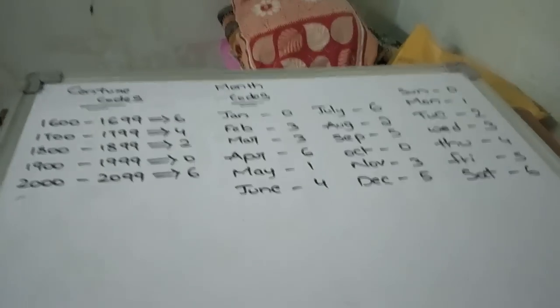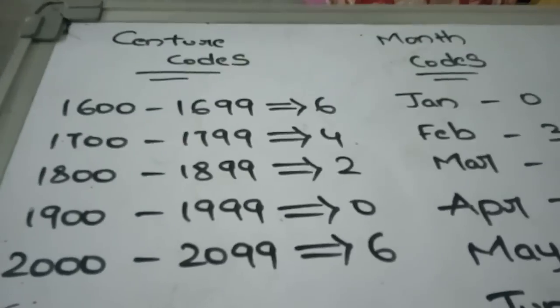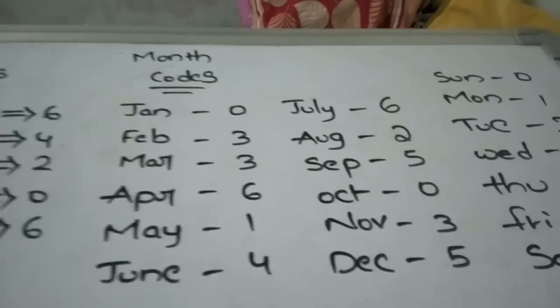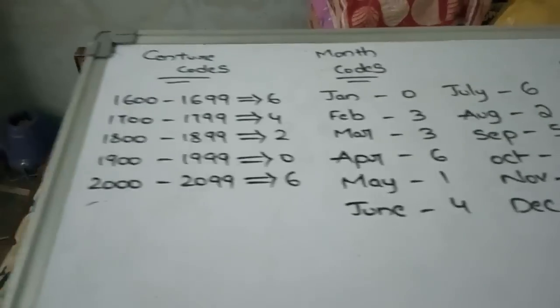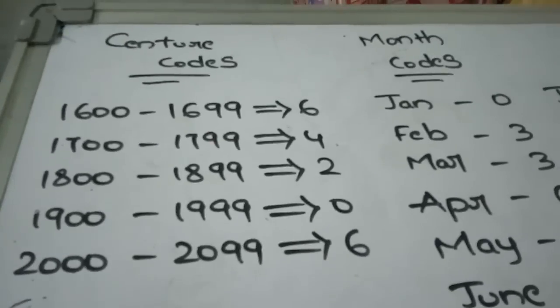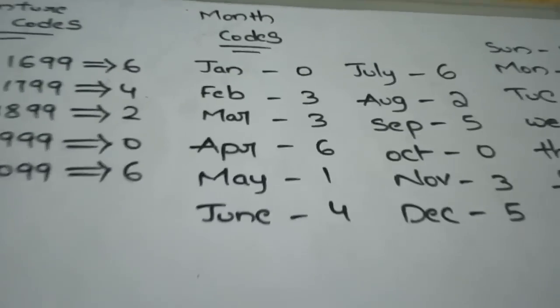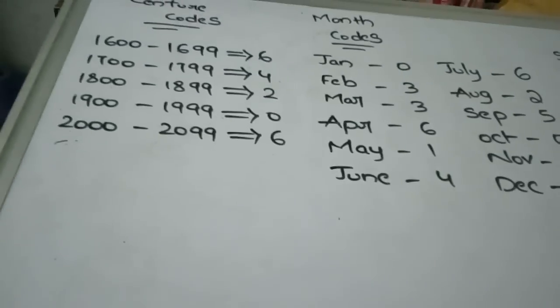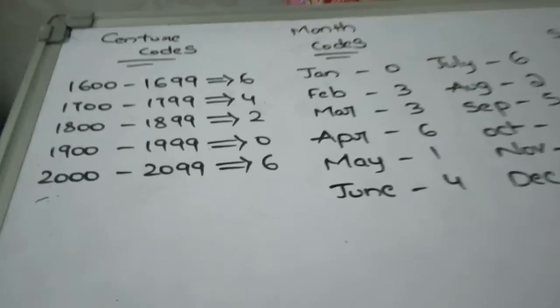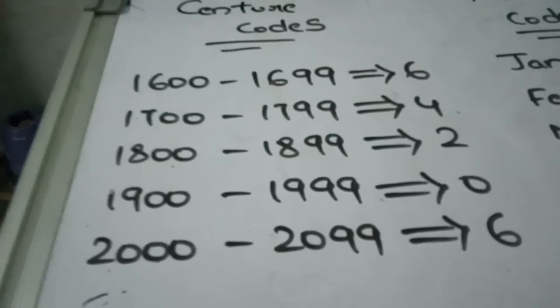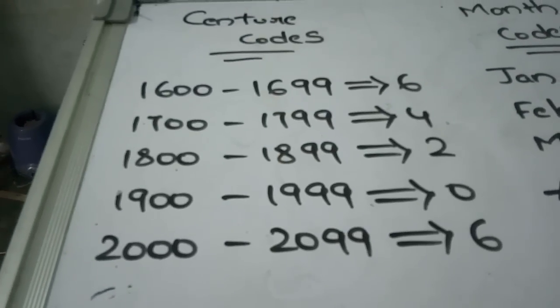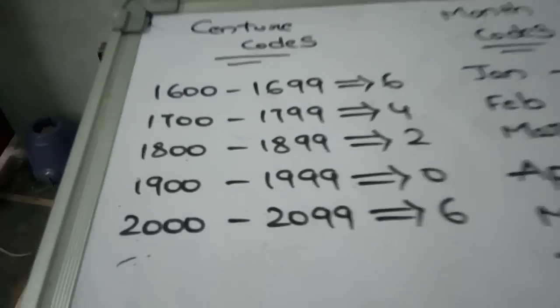Hi friends, today I am going to tell you about how to find the day of the week for any date by using the century codes, month codes, and day numbers. You have to remember the century codes and month codes, then you can easily tell the day if you have a date — from 1600 to 2099.